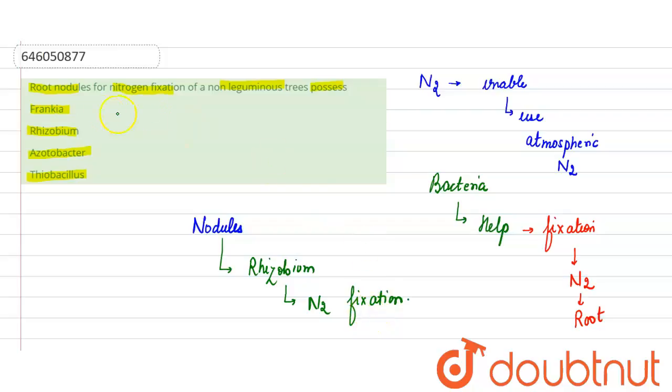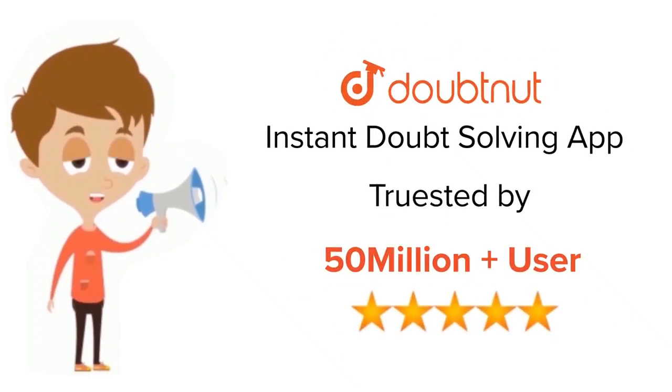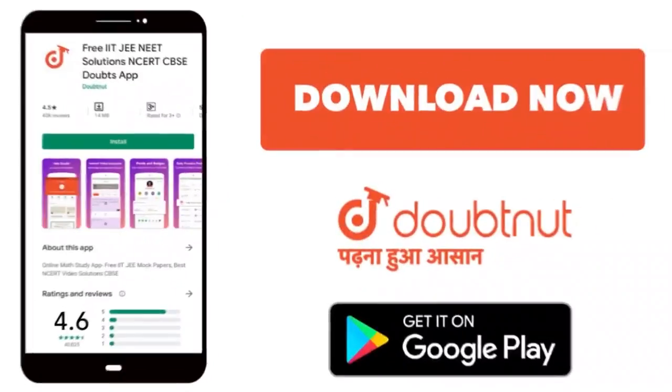So students, here the bacteria which is present, that is known as Rhizobium. I hope it would be clear, so thank you. For class 6-12, IIT-G and NEET level, trusted by more than 5 crore students. Download Doubtnet app today.